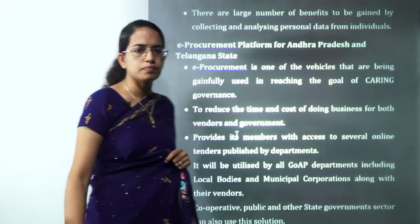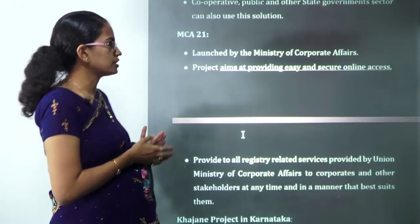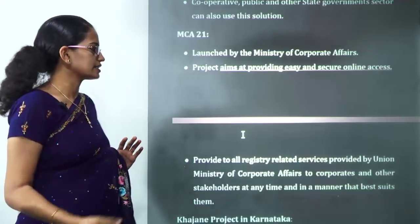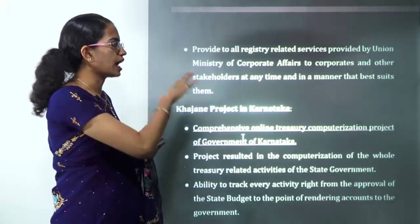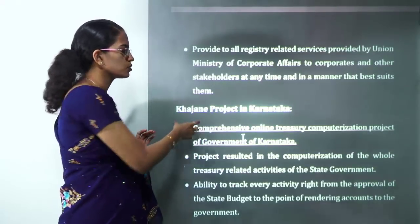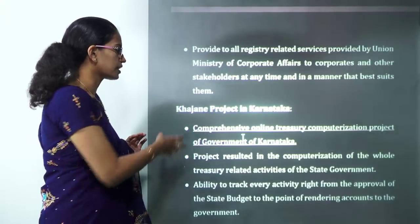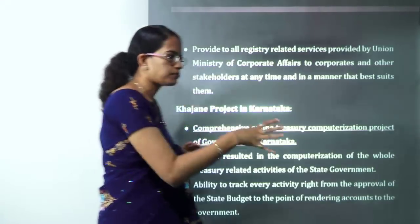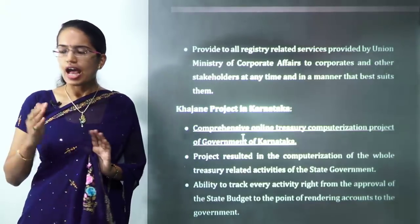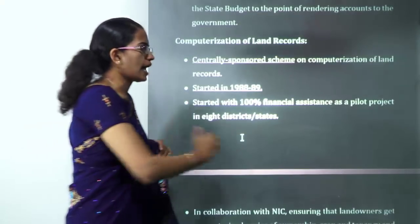MCA 21 has been launched by the Ministry of Corporate Affairs, providing easy and secure online access to projects registered at the ministry. The Khajane project, as the name suggests, is an online project to computerize the treasury of the government of Karnataka — a state-bound project important for state-specific questions.